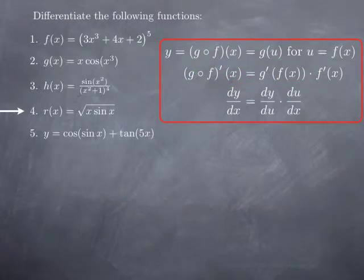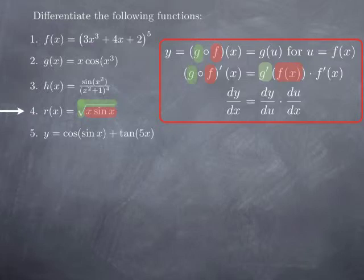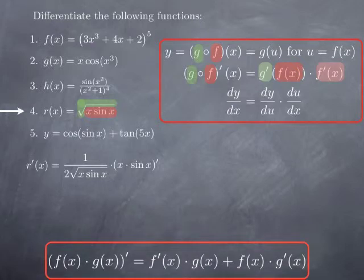Moving on to the fourth function, we want to differentiate the square root of x times sine x. Here we plug the function x·sin(x) inside the square root function. So the inside function is x·sin(x) and the outside function is the square root function. It's a composite, so we're going to use the chain rule. We start with the derivative of the outside function — the square root function — evaluated at the inside function. The derivative of square root is 1 over 2 square root, so evaluated at x·sin(x) we obtain 1 over 2 square root of x·sin(x). Then we have to multiply by the derivative of the function inside, which is the product rule recorded at the bottom.